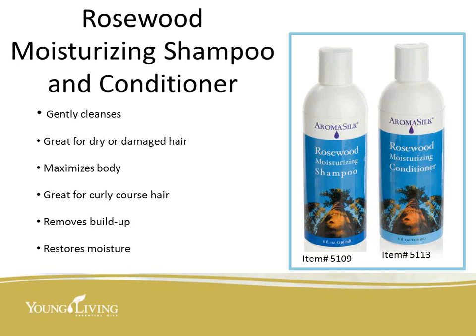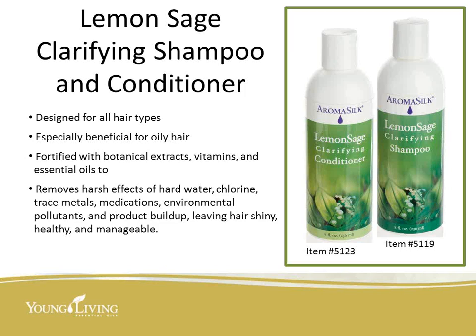Rosewood Moisturizing Shampoo and Conditioner is for curly or coarse hair. It gently cleanses, is great for damaged or dry hair, maximizes body, removes buildup, and restores moisture. Lemon Sage Clarifying Shampoo and Conditioner is designed for all hair types, especially beneficial for oily hair. It removes harsh effects of hard water, chlorine, trace metals, medications, environmental pollutants, and product buildup, leaving hair shiny, healthy, and manageable. If you color your hair, I recommend using Lemon Sage Clarifying Shampoo before going to your hairdresser — it helps your hair keep its color longer.